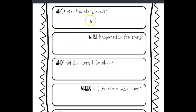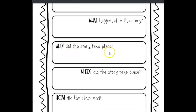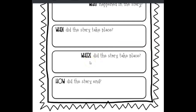You're going to fill these in. Who was the story about? That's easy, isn't it? What happened in the story — tell me the major events. When did the story take place? We talked about that — it talks about the seasons, and that is your 'when.' Where did the story take place? Even though it didn't say exactly where, you can look at the pictures and guess. And then how did the story end? If you need to look back at the story, just rewind the video. Practice your four W's and an H all by yourself. You got this!